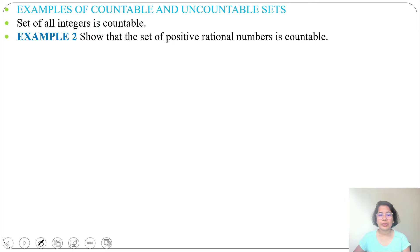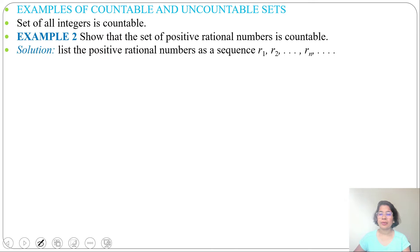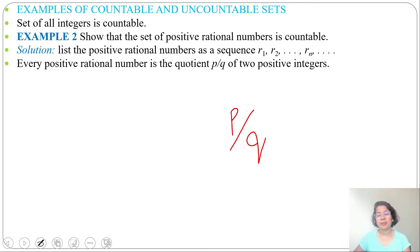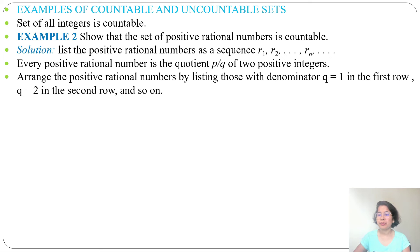Example 2: show that the set of positive rational numbers is countable. Rational numbers can be listed as R1, R2, ..., Rn. A rational number is of the form P/Q, where P and Q are positive integers. We can list them according to denominator: if denominator is 1, it goes in the first row; if 2, in the second row, and so on.